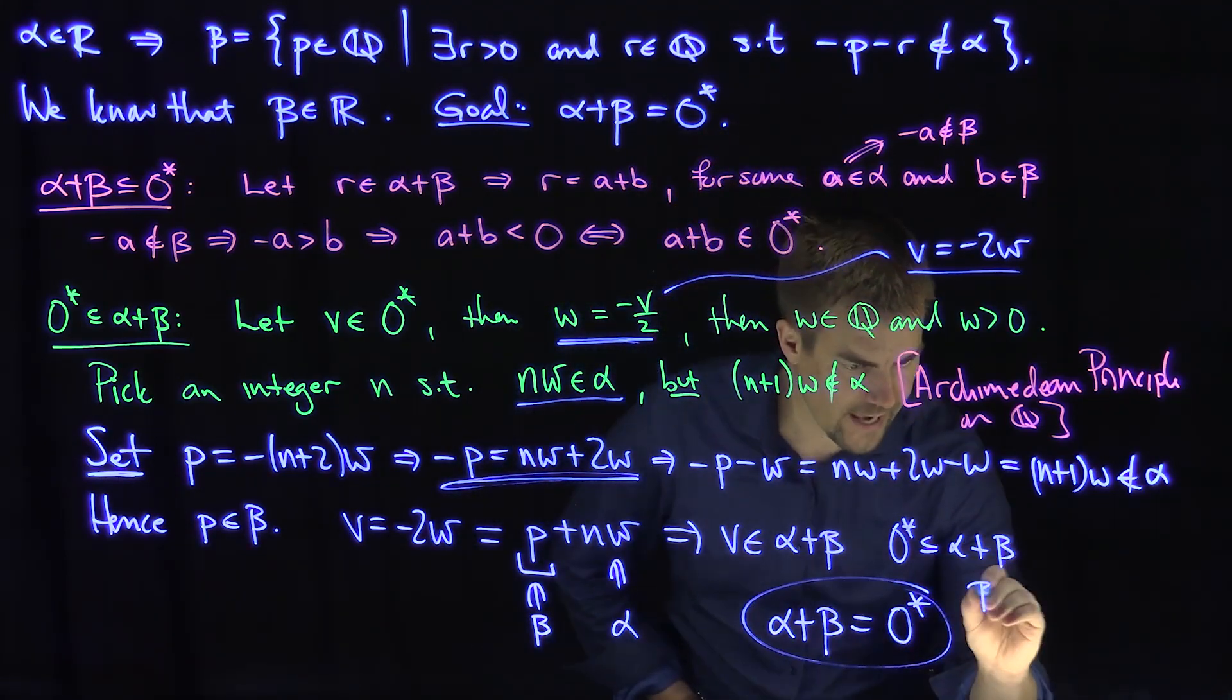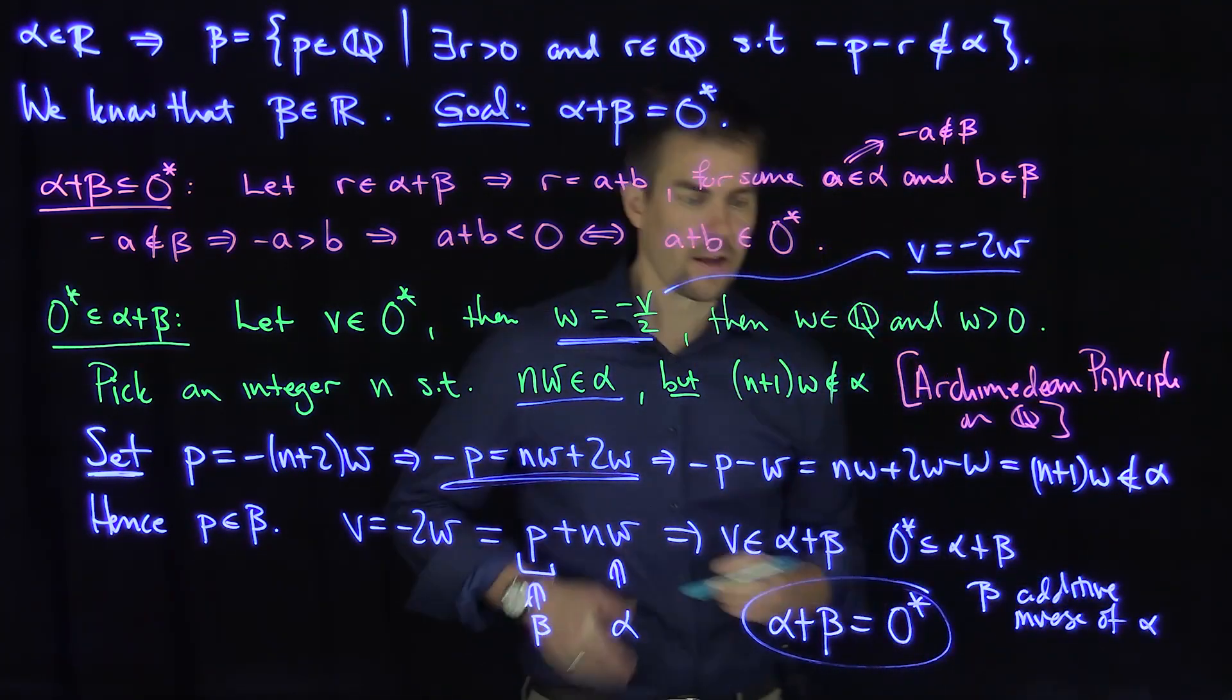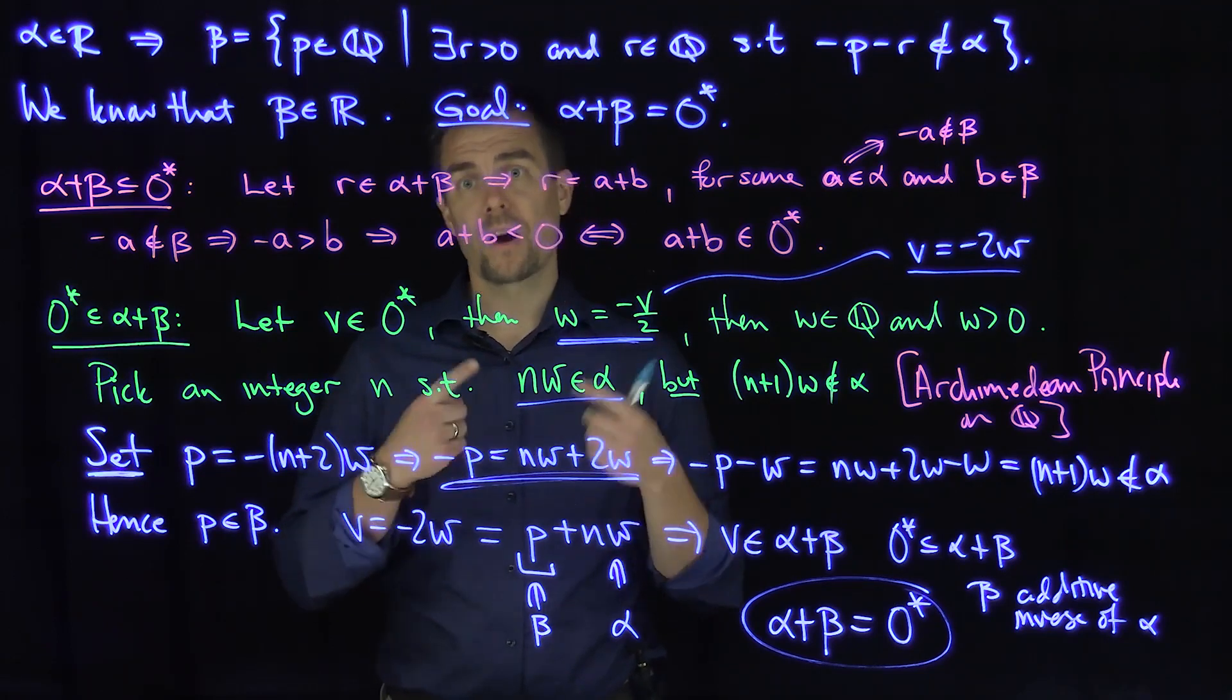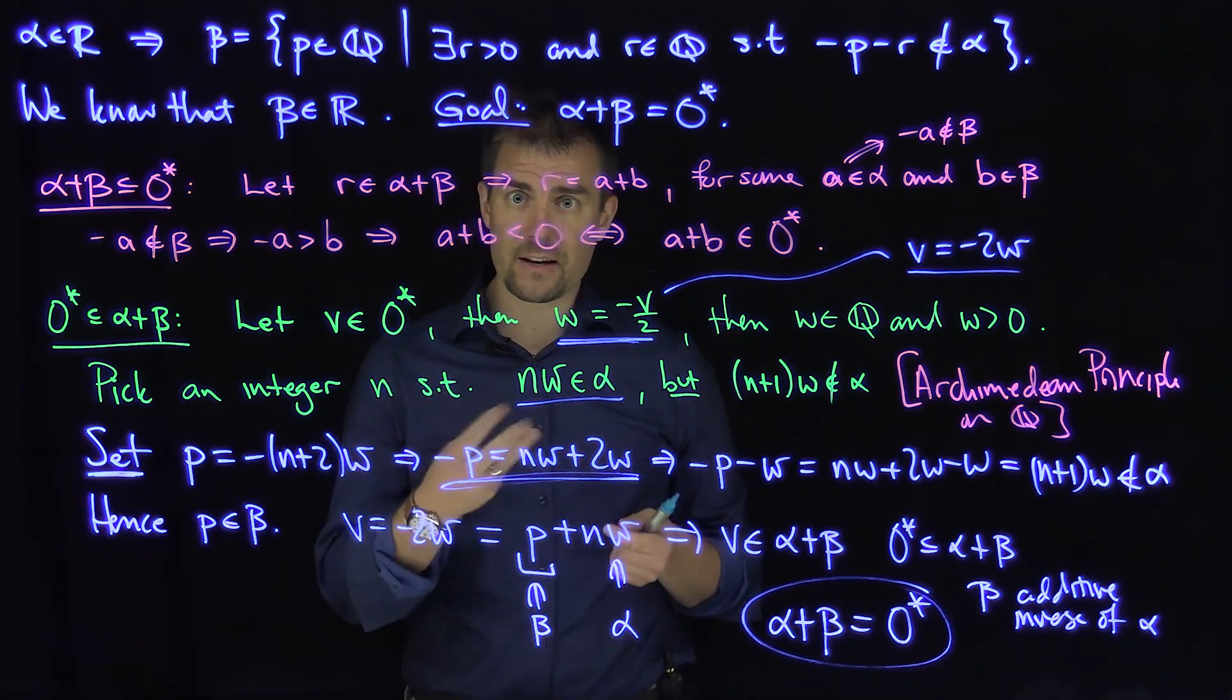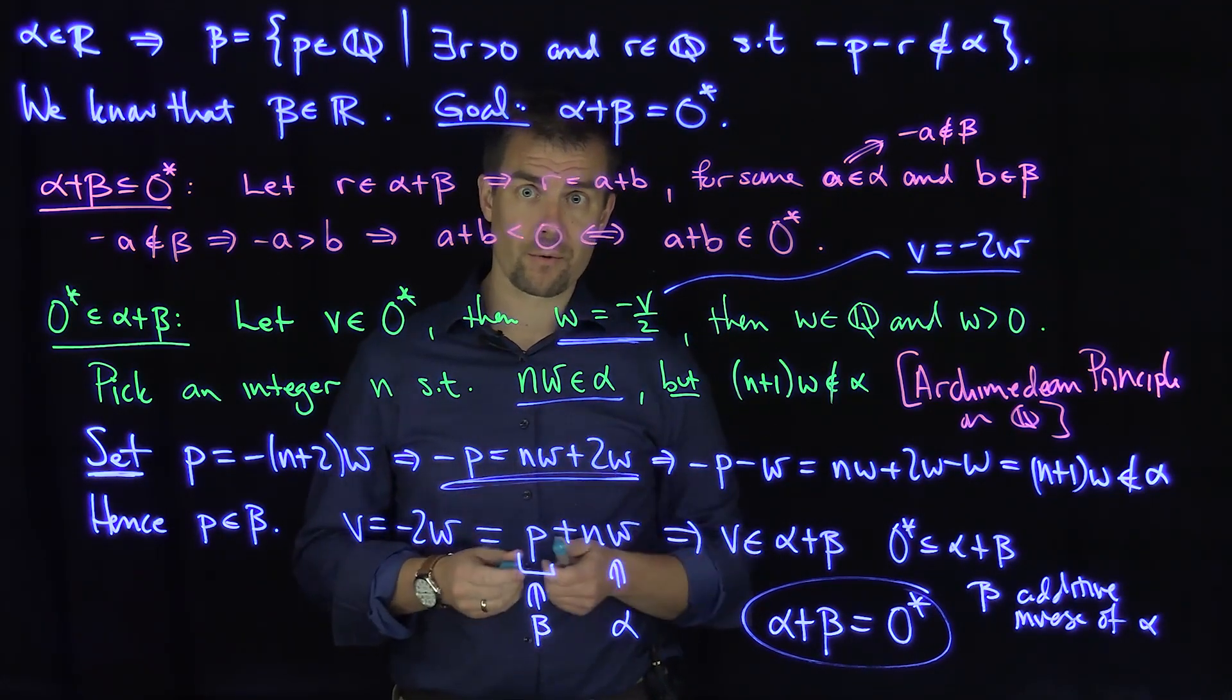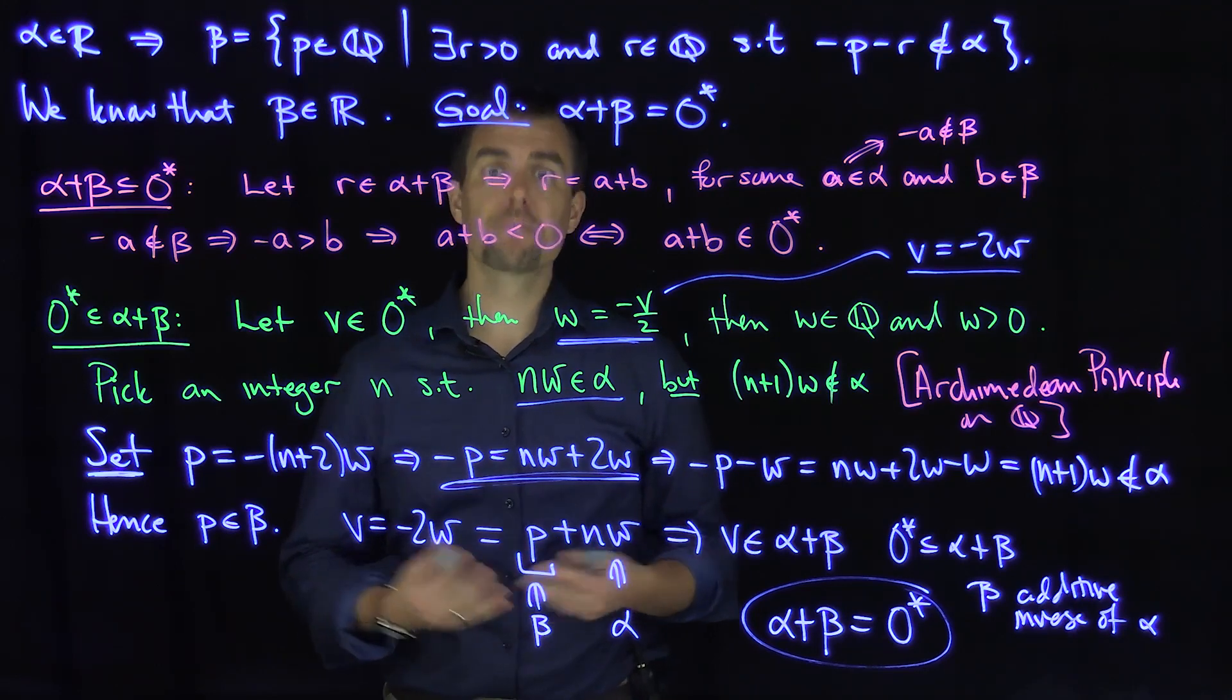And that means that beta is the additive inverse of alpha. And this is the final property of the field axioms for addition. So we've shown all five field axioms for addition: that the sum of alpha plus beta, where alpha and beta are real numbers, is a real number. It's commutative, it's associative, it has an additive identity, it has an additive inverse. So we've shown all five field axioms for the operation of addition of the real numbers. In further videos, we'll conclude the ordering properties for the real numbers and define multiplication. Thank you very much.